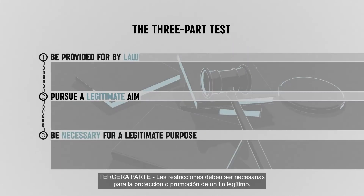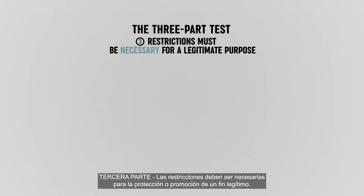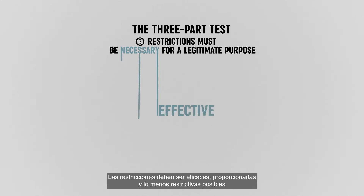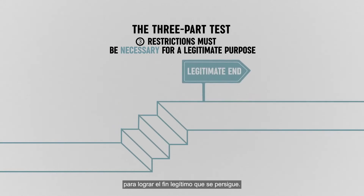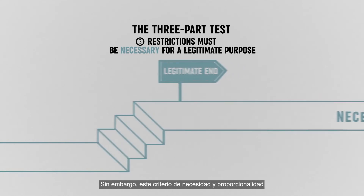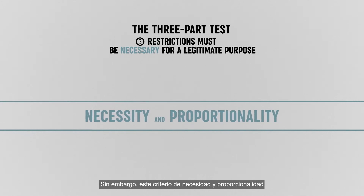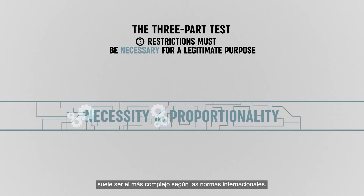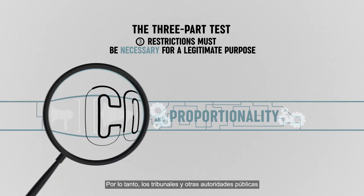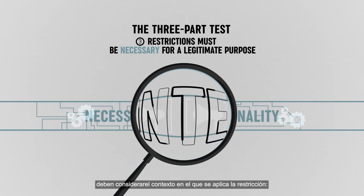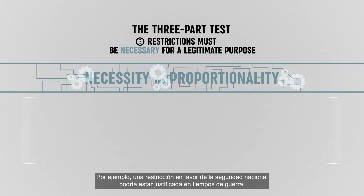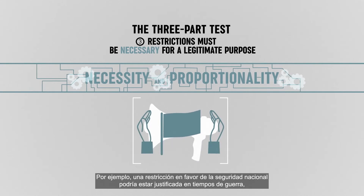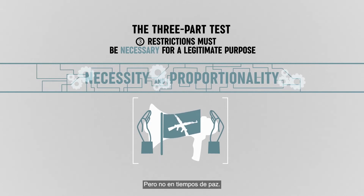Part 3: Restrictions must be necessary for the protection or promotion of a legitimate purpose. Restrictions should be effective, proportionate, and the least restrictive possible to achieve the legitimate end pursued. However, this criteria of necessity and proportionality is often the most complex according to international standards. Courts and other public authorities should thus consider the context in which the restriction is applied. For instance, a restriction in favor of national security might be justifiable in times of war, but not in times of peace.